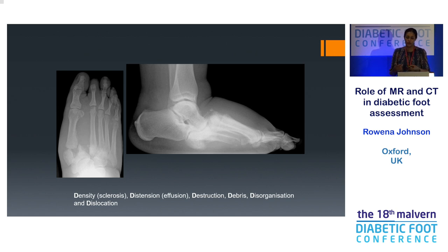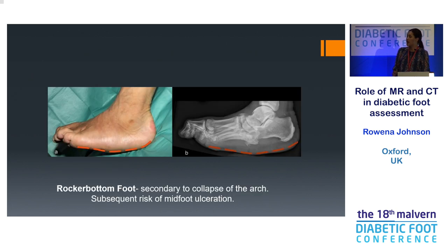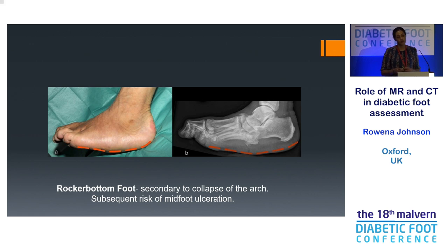What was the onset? What are their inflammatory markers doing? Because they can be hard to differentiate, particularly in the early stages. This is an example of a rocker bottom foot, secondary to collapse of the arch — you can see it here. As a result, they have a subsequent risk of midfoot ulceration, which then makes them more at risk of developing osteomyelitis.